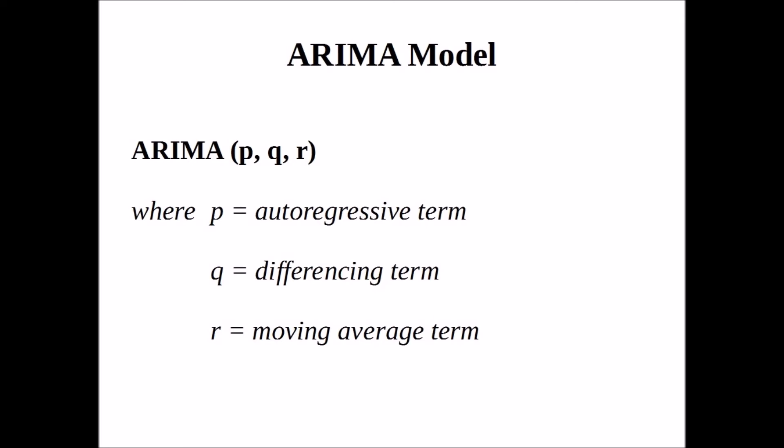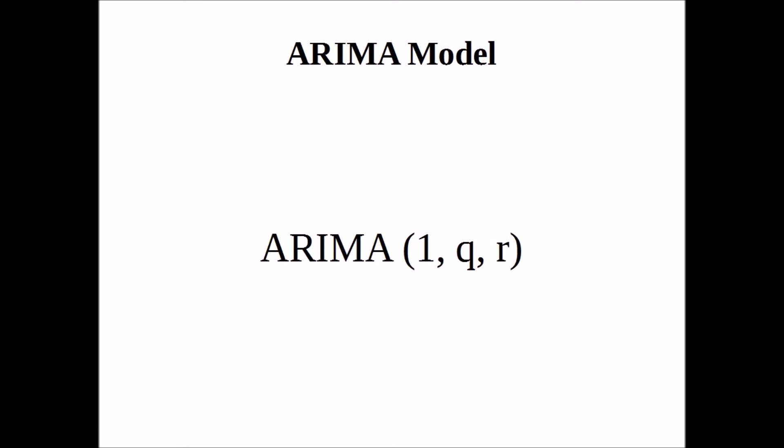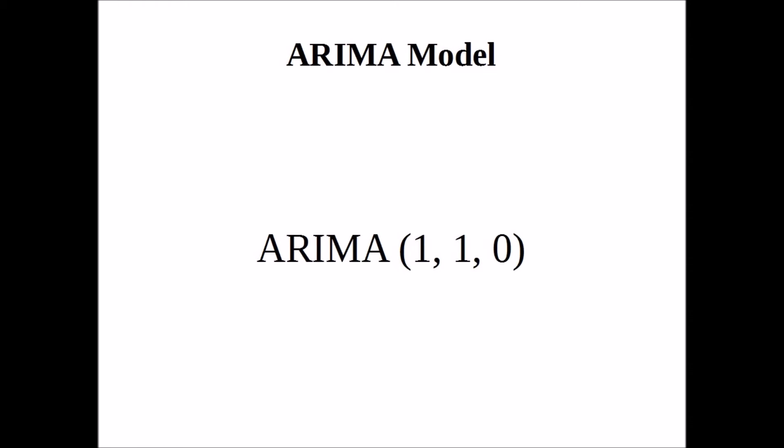Now the ARIMA model itself consists essentially of two parts: the autoregressive term, the differencing term, and the moving average term. Given we saw that our partial ACF dropped after lag 1, our ARIMA model will accordingly have an AR1 term. Additionally, to account for the first differences in our model we will assign our differencing term a value of 1 and our moving average term a value of 0. So our ARIMA model is specified as (1,1,0).